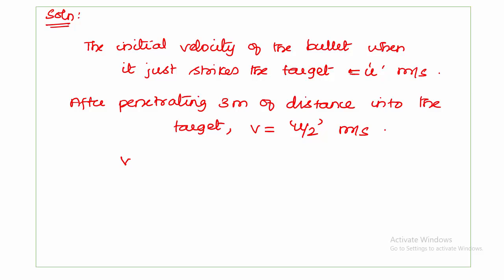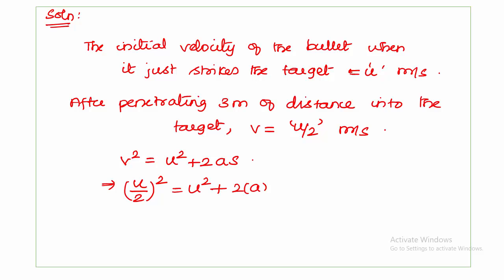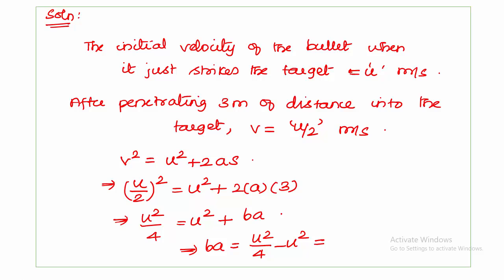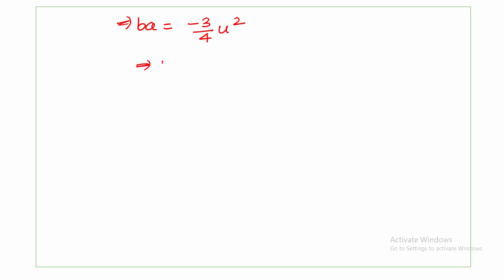For that we can use the kinematic equation: v² = u² + 2as. Here v is u/2, so (u/2)² = u² + 2 × a × 3. That gives u²/4 = u² + 6a. So 6a = u²/4 − u² = −3u²/4. Therefore, a = −u²/8. This is the acceleration value from equation 1.